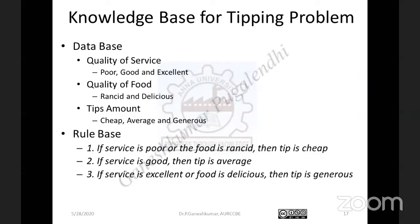In general, the rule base is generated based on opinions collected from a set of wait persons. That is, you have to go to several hotels, ask the wait persons whether they get tips and at what level. You have to prepare a questionnaire, collect data, and according to the data collected, you come to an idea for generating the rule base. The rule base generated for this problem is: if service is poor or the food is rancid, then tip is cheap.